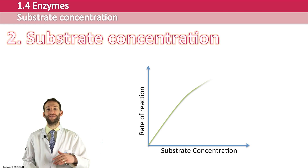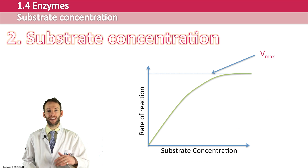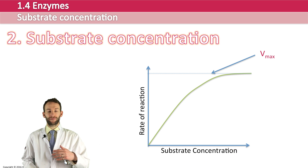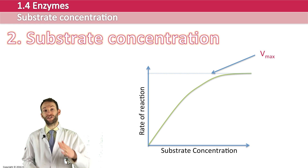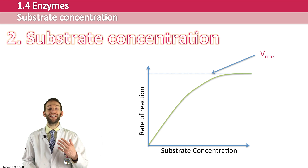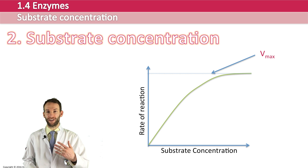At this point we say that Vmax has been achieved — this is the maximum rate of reaction. At that point, if you add more enzymes then the reaction can start increasing again, but any more substrate is going to have no greater effect on the rate of the reaction.